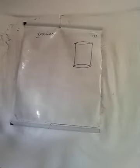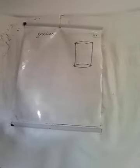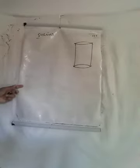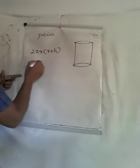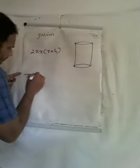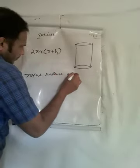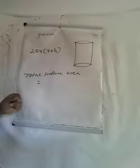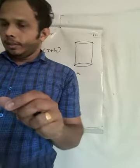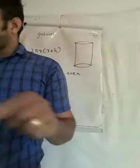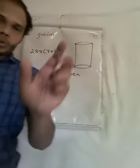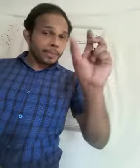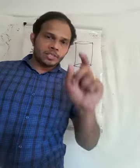Cylinder surface area — the total surface area of a cylinder equals 2πr(r + h). This is also given in your textbook, page number 183. You should draw the cylinder and note subtopics: cube, cuboid, and cylinder.